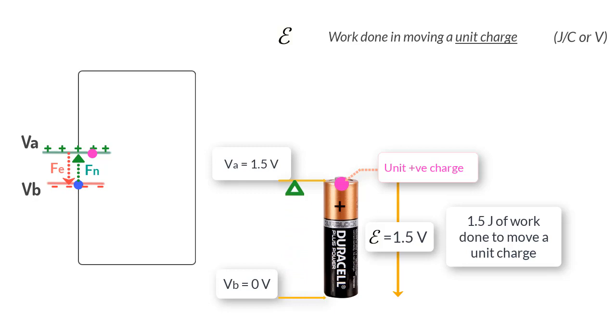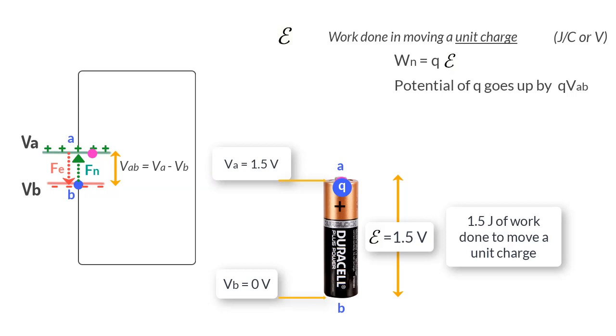So if we move a positive charge Q from terminal B to A, the work done by this chemical force would therefore be WN is equal to Q times the electromotive force.